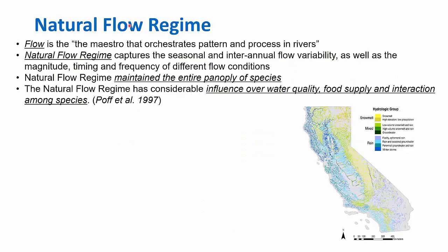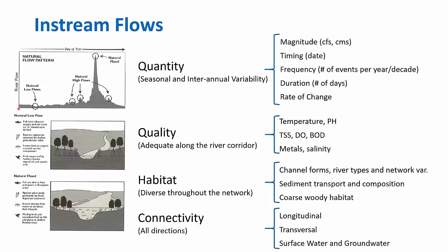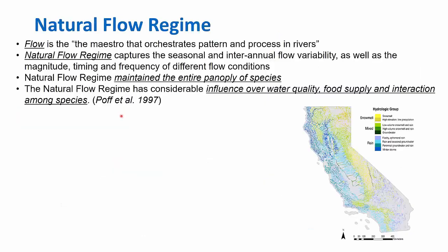The natural flow regime, the flow regime that occurs in rivers without any human alterations, captures that seasonal and interannual flow variability. It captures this variation within a year and throughout different years.